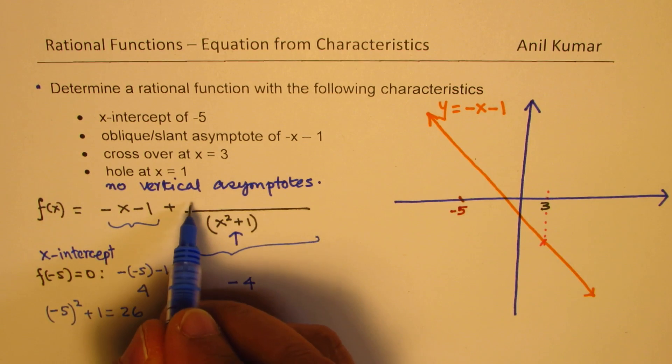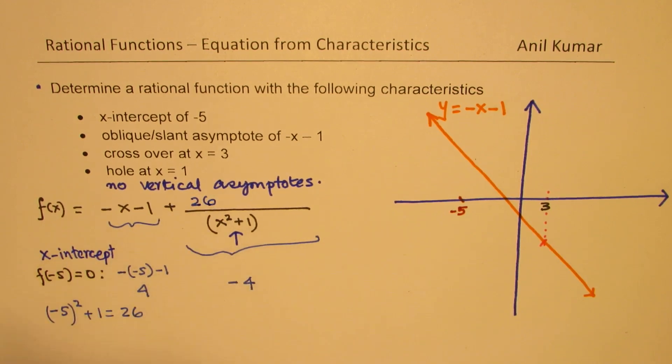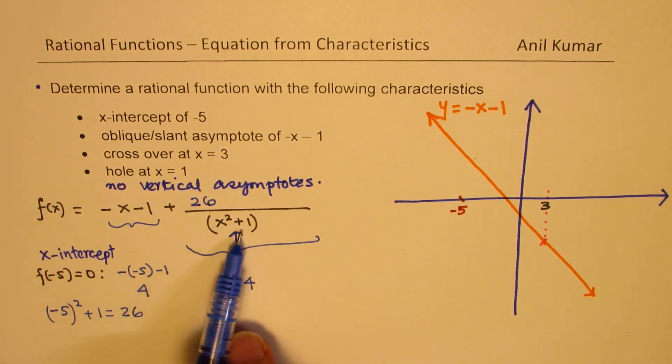Well, let me first cancel this 26. So 26 is when I substitute 5. So I get now 26 divided by 26 is 1.